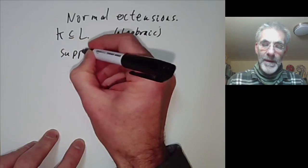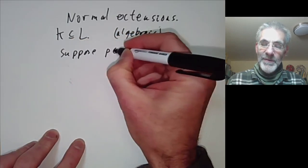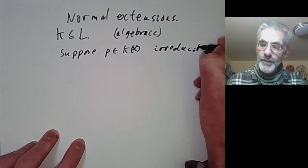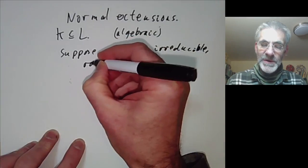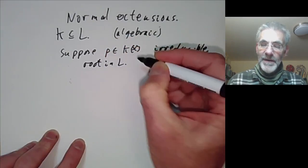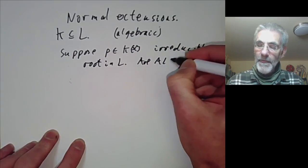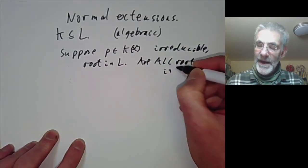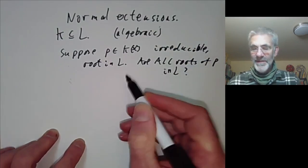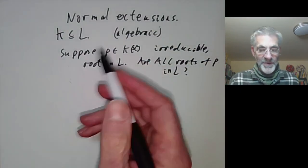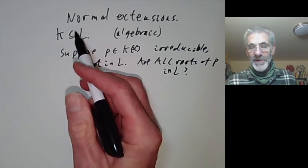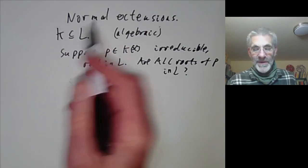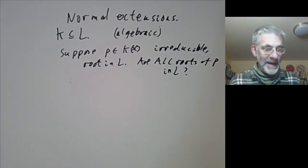Suppose a polynomial p with coefficients in k is irreducible and has a root in L. Then we can ask: are all the roots of p in L? It's not quite clear what we mean by a root of p in general, but informally the question is, if an irreducible polynomial has one root in L, are all its roots in L?